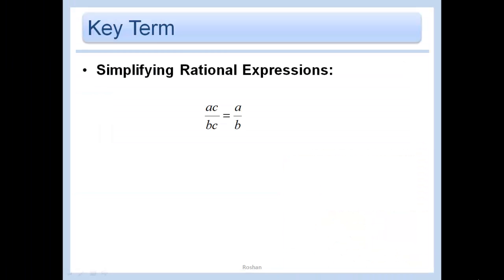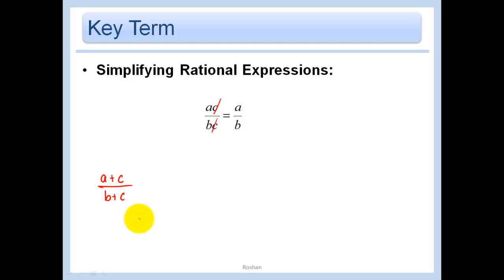Let's start with simplifying rational expressions. If I have A times C over B times C, the C's simply cancel out and I get A over B. Don't confuse that with A plus C over B plus C — in this case I cannot simplify. Do not cross out those C's.